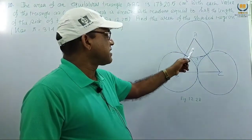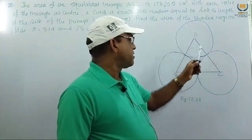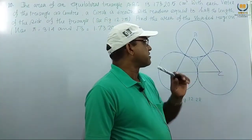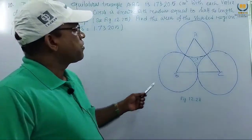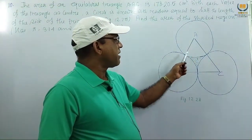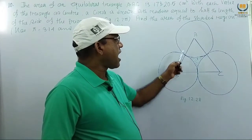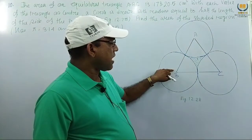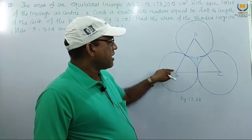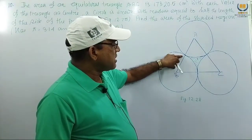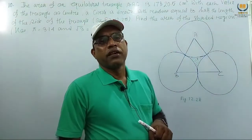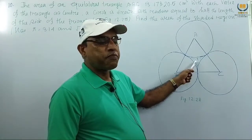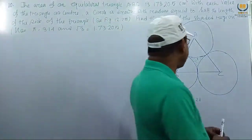We consider A as a center and draw a circle, B as a center for another circle, and C as a center for another circle — three circles total. The radius is half the length of the side of the triangle, and that half portion is the radius of the circle. Now we have to find the area of the shaded region.